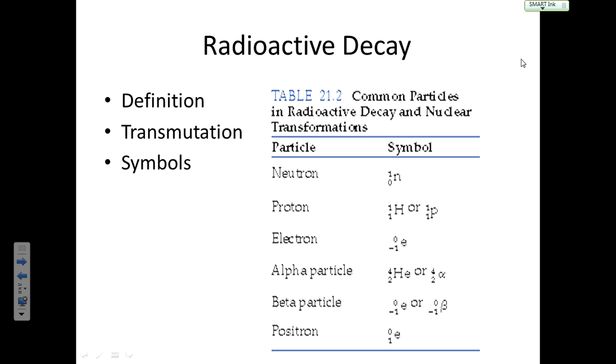Now, most of what we're going to concentrate on today is radioactive decay. And we know that's when a nucleus basically starts to fall apart, right? Because it's unstable. What's transmutation? It's when an element undergoes radioactive decay and it becomes a different element. It changes.